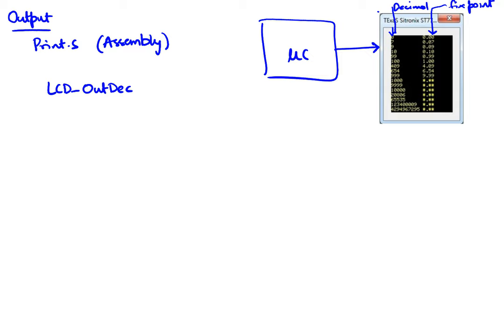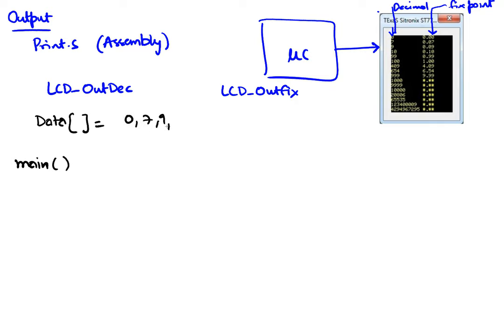One function is called LCD_out_dec, which produces the decimal value, and the other is LCD_out_fix to produce the fixed point number. These numbers come from the main program — you're not being asked to write or modify it. In the main program there are calls to these two functions. All our data is put in a big array containing values like zero, seven, nine, ten, ninety-nine, one hundred, and so on.